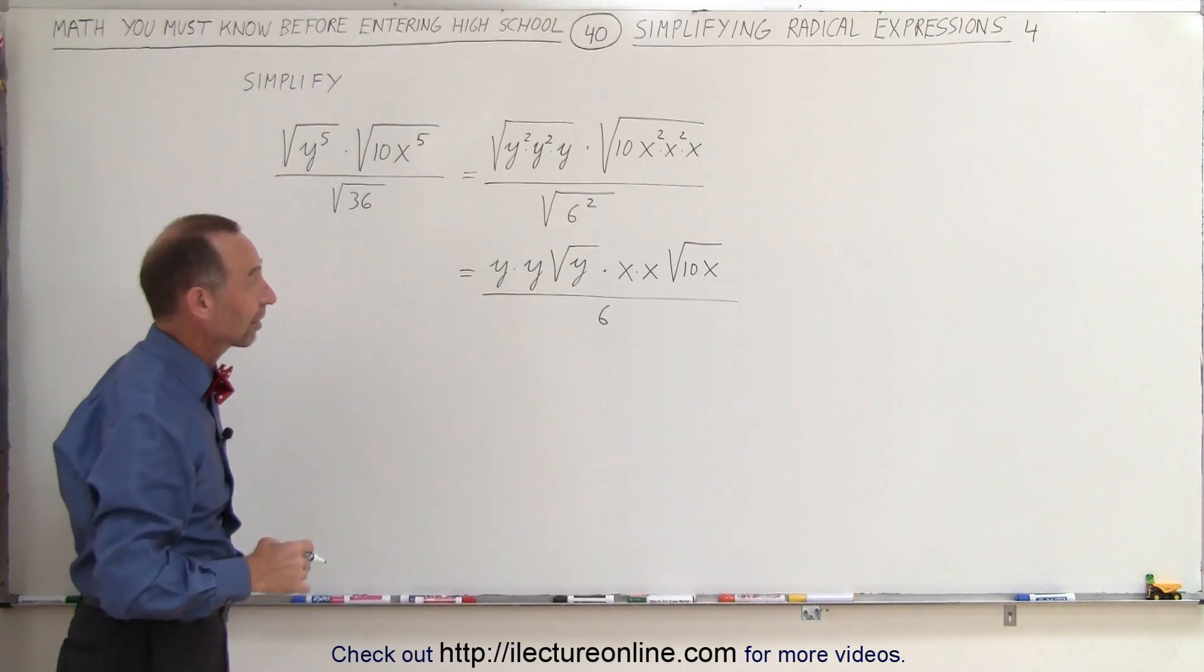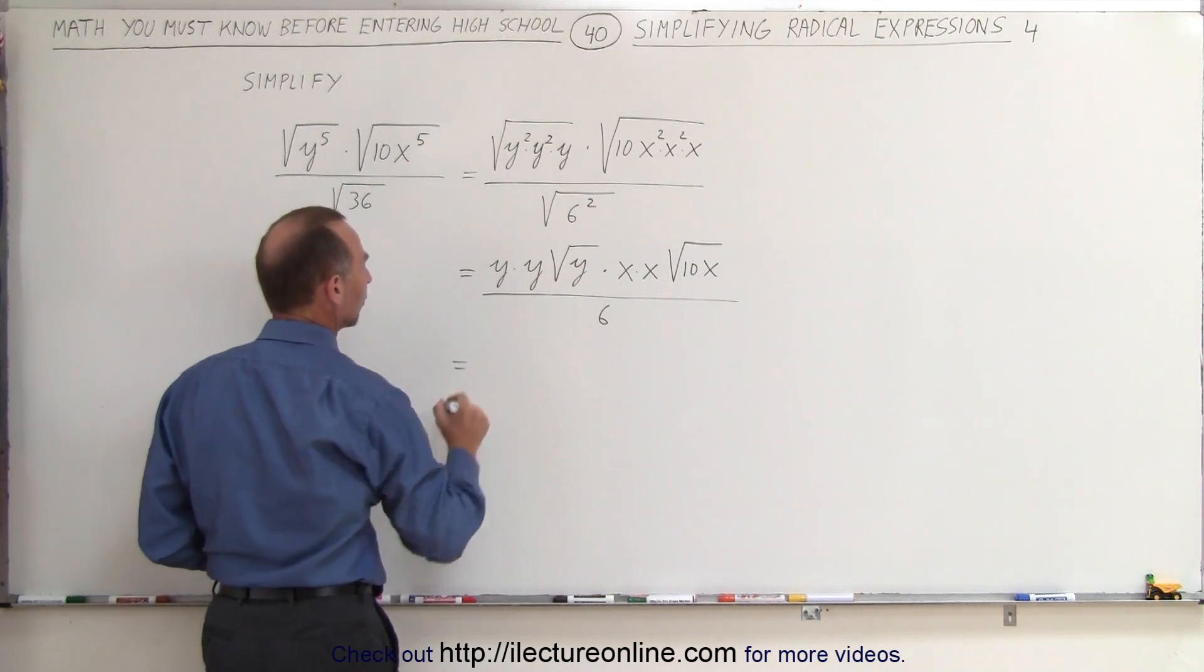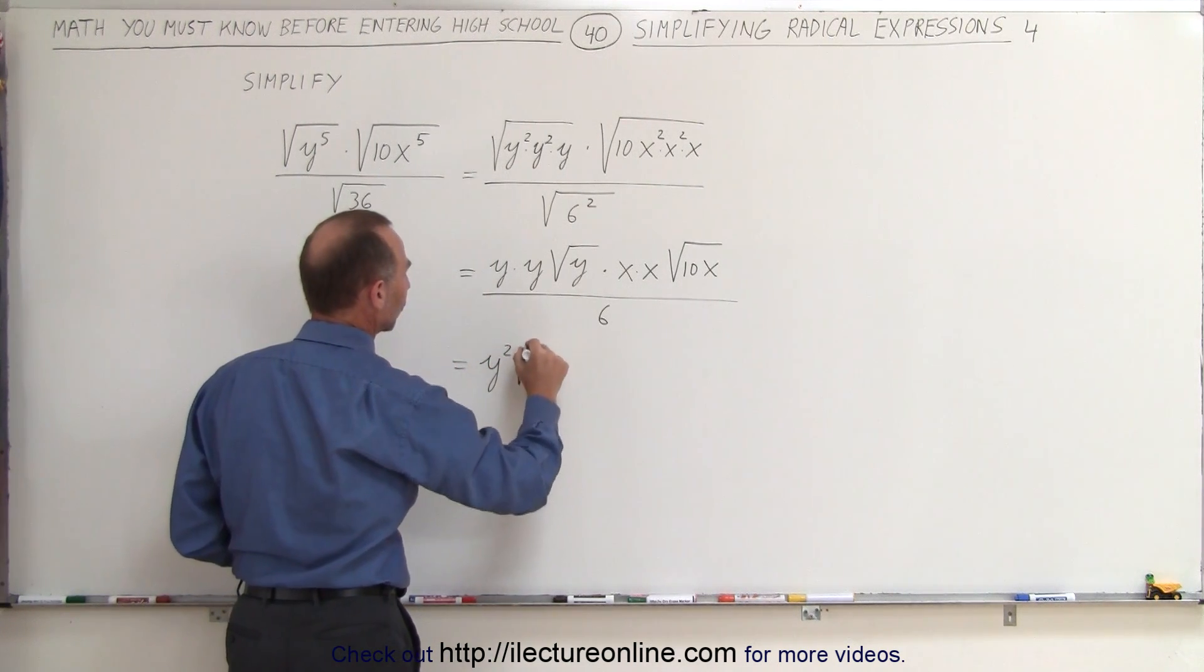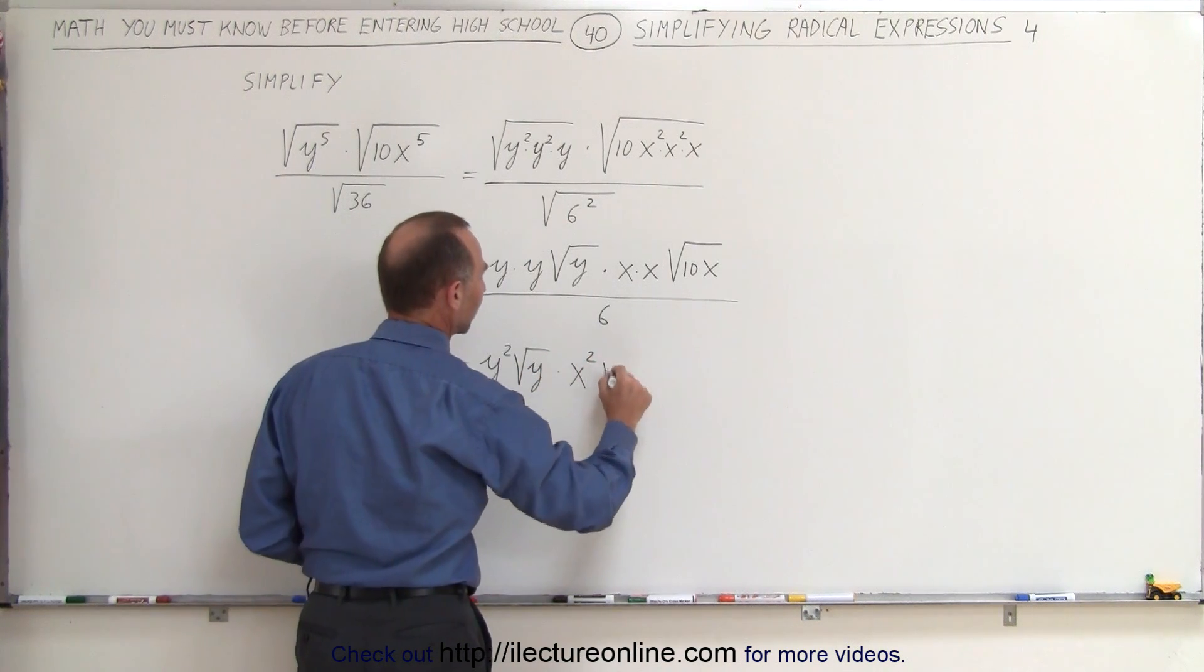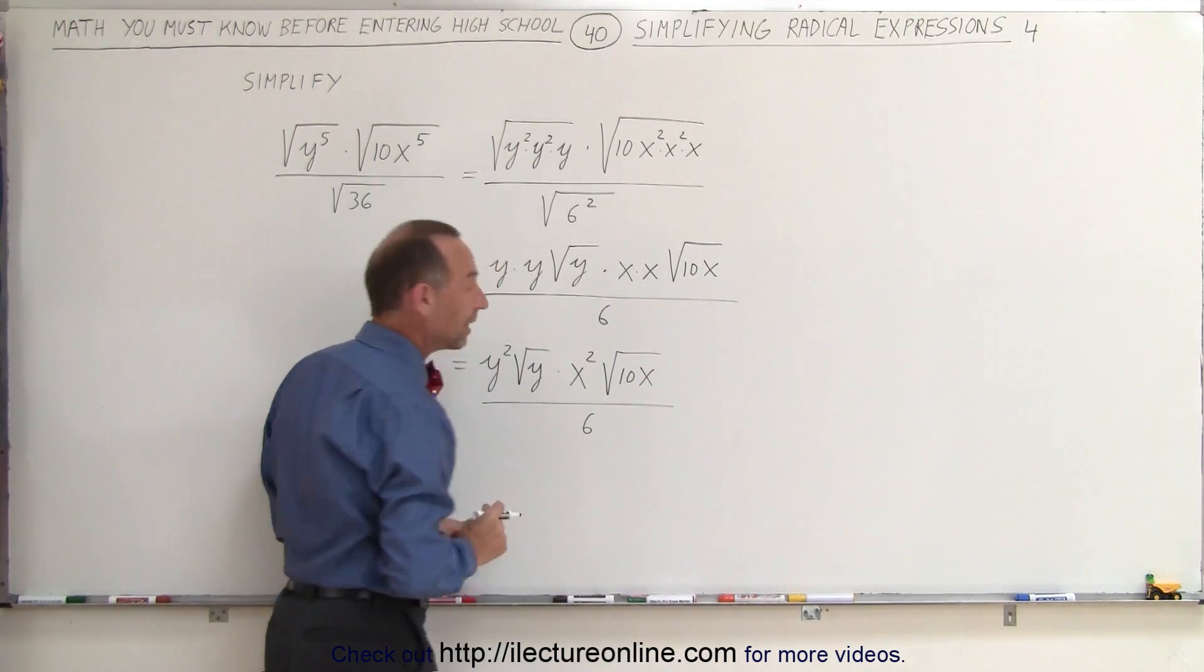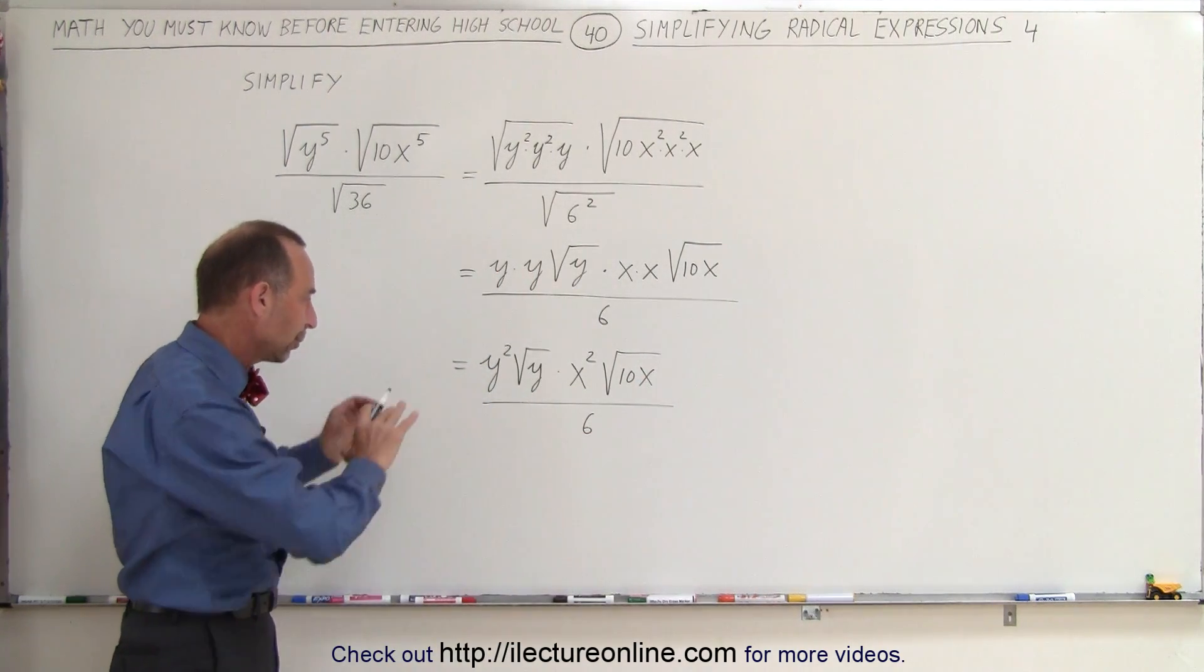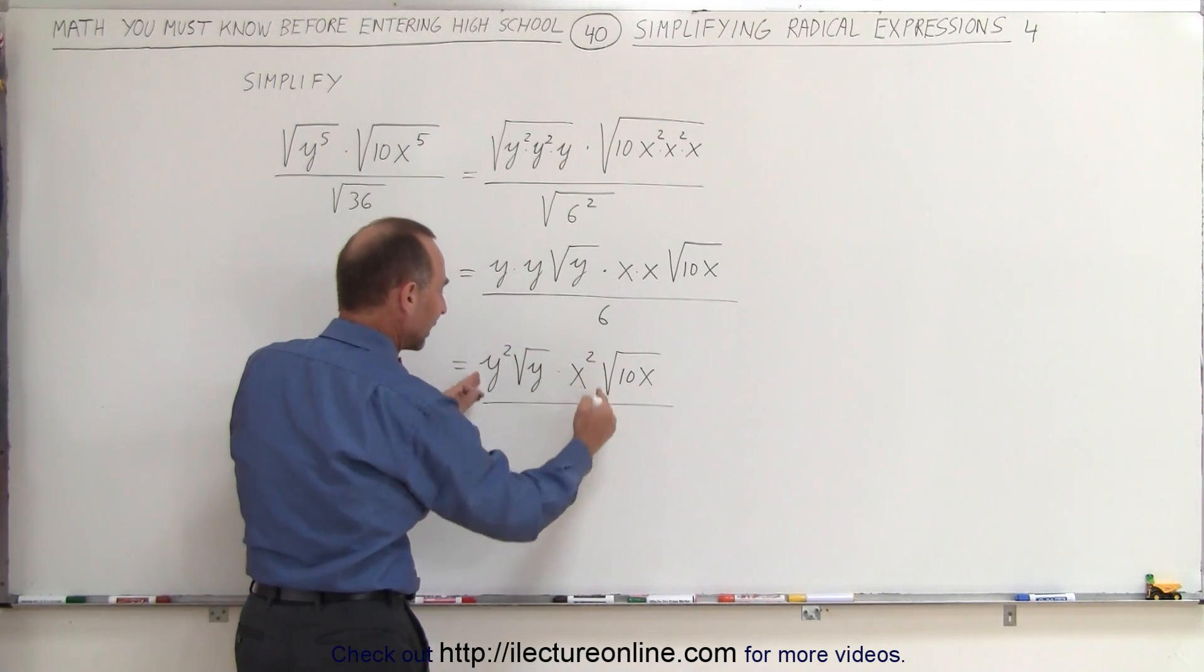The square root of 6 squared is simply 6. Now we can combine like terms and we'll write it as follows. This is equal to y squared times the square root of y times x squared times the square root of 10x divided by 6. And then combining like terms, well there are really no like terms, but then rewriting it a little bit, we can combine this and this, and we combine these.